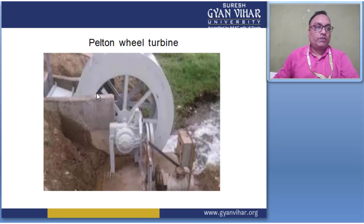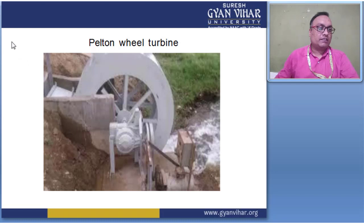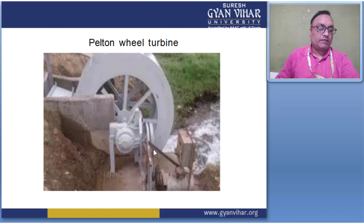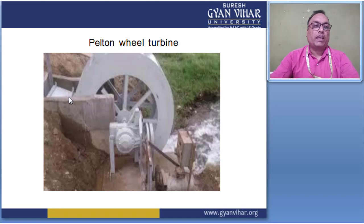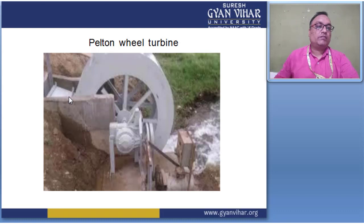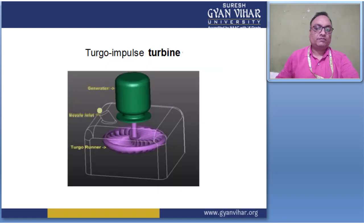This is a figure of the Pelton wheel turbine. In this type of turbine, this is the real picture of the turbine. The tail race is here, and water comes from the upper side — from the top head of the dam — connected to different types of accessories. This turbine gives mechanical work, which is converted by the generator. A generator is coupled to it and provides electricity.